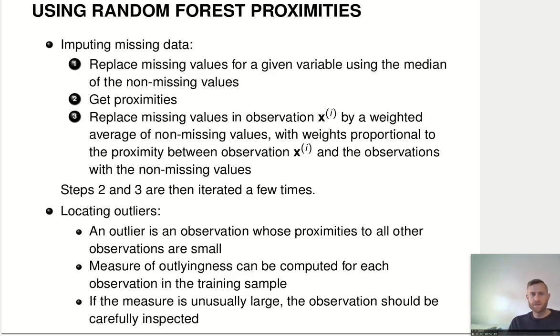Why is this useful? Well, first of all, we can use these random forest proximities to get a fairly good imputation mechanism going for missing data. So, if we have missing data, we want to replace them with suitable values. What's a suitable value?